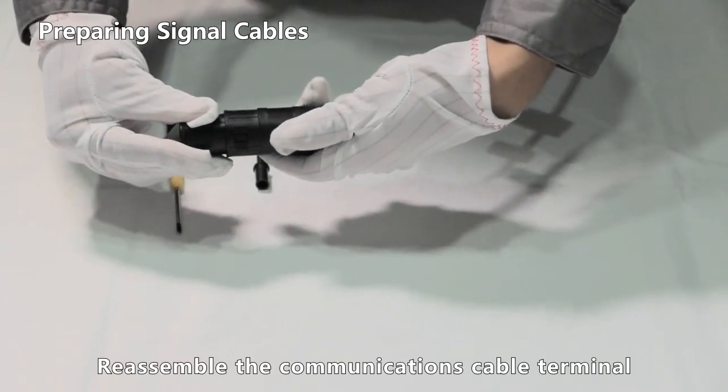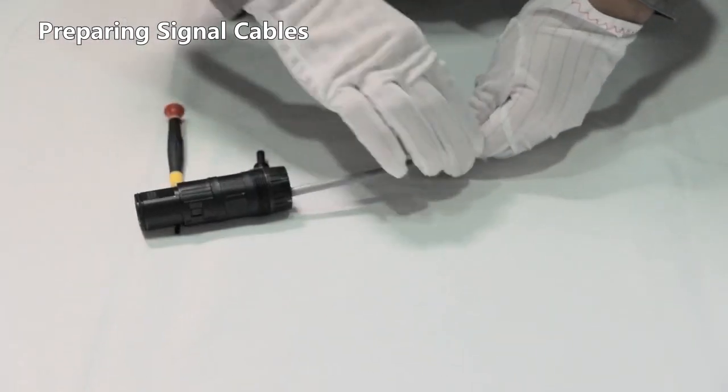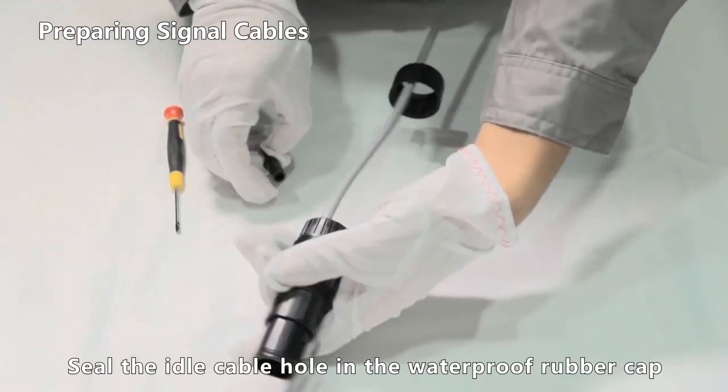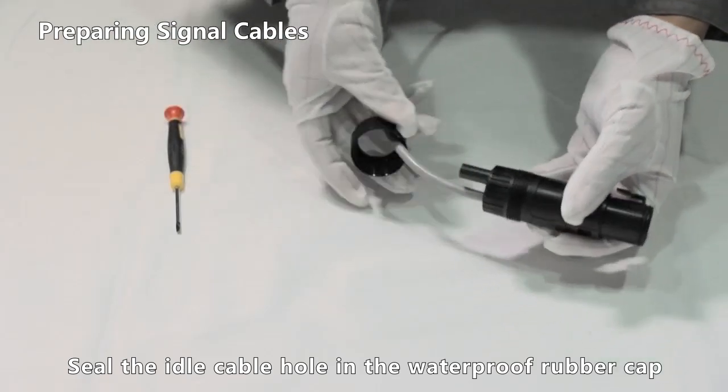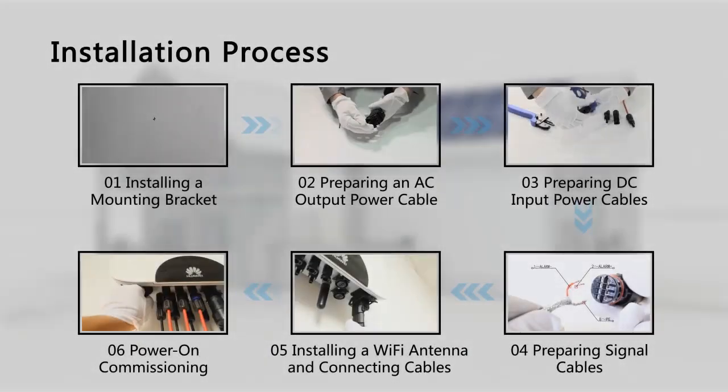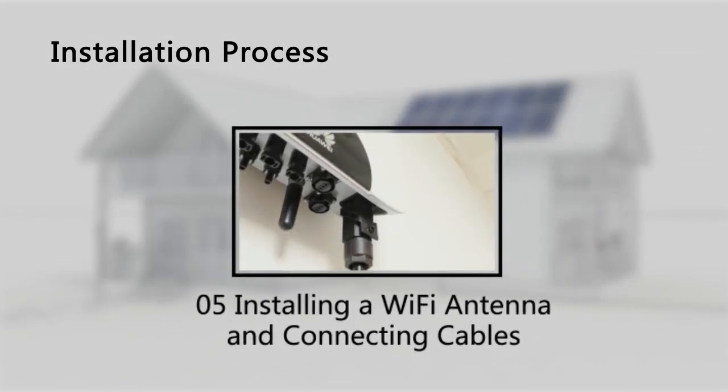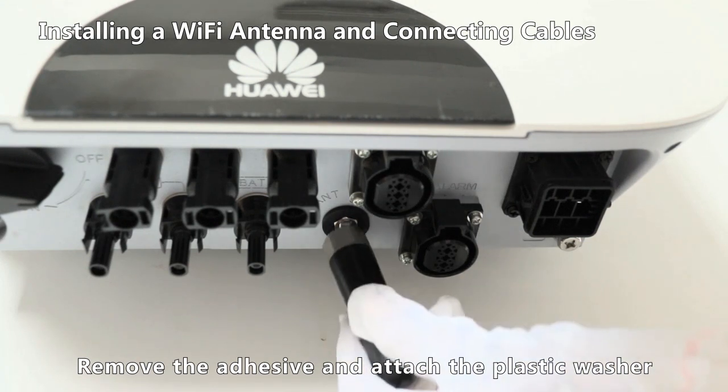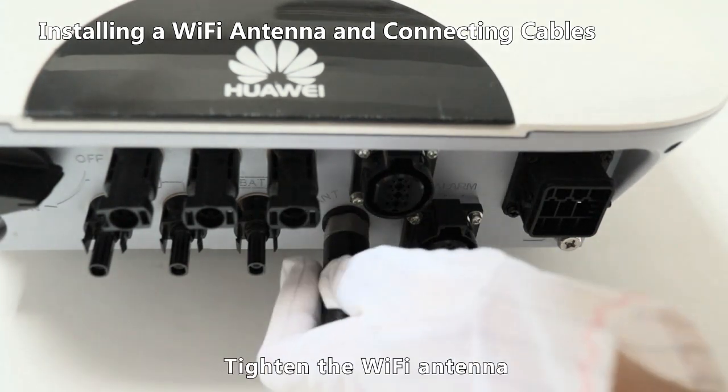Reassemble the communications cable terminal. Seal the idle cable hole in the waterproof rubber cap. Remove the adhesive and attach the plastic washer. Tighten the Wi-Fi antenna.